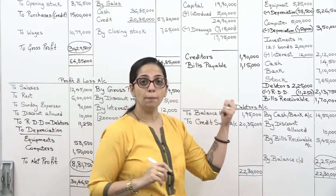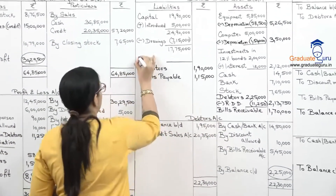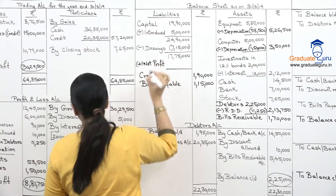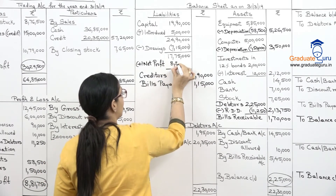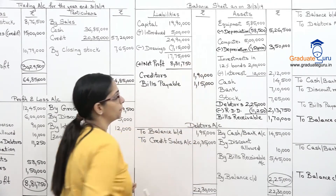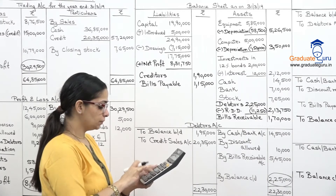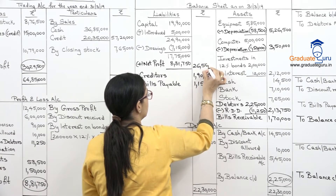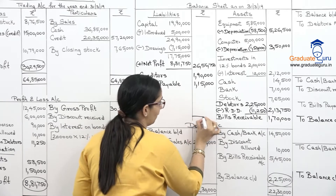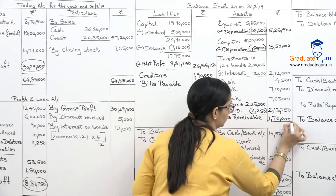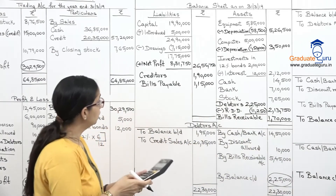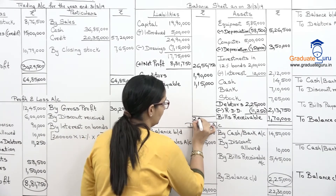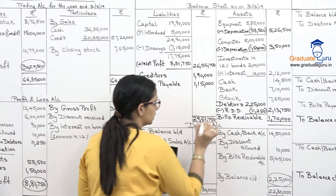The net profit is taken to the balance sheet in capital. Adding to capital: opening nineteen lakh ninety thousand, plus capital introduced five lakhs, minus drawings seven lakh fifteen thousand, plus net profit eight lakh eighty one thousand seven fifty gives a closing capital of twenty six lakh fifty six thousand seven fifty.